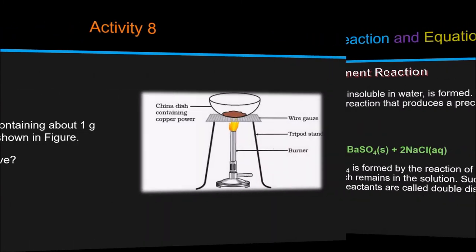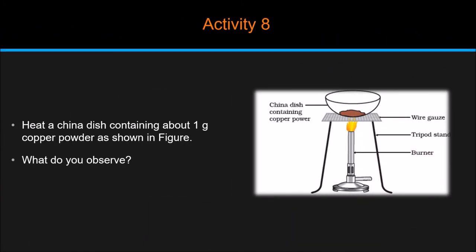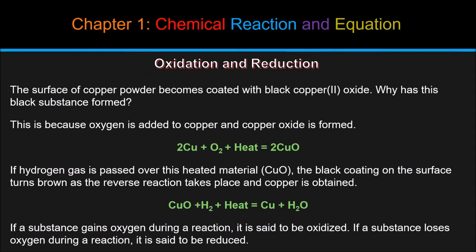Now let us go through another activity which is a part of oxidation and reduction. To perform this activity, heat a china dish containing about 1 gram of copper powder as shown in figure. What do you observe? In oxidation and reduction, the surface of copper powder becomes coated with black copper(II) oxide. Why has this black substance formed? This is because oxygen is added to copper and copper oxide is formed. 2Cu plus O2 plus heat equals 2CuO. If hydrogen gas is passed over this heated material, CuO, the black coating on the surface turns brown as the reverse reaction takes place and copper is obtained. CuO plus H2 plus heat equals Cu plus H2O. If a substance gains oxygen during a reaction, it is said to be oxidized. If a substance loses oxygen during a reaction, it is said to be reduced.